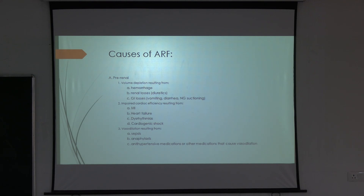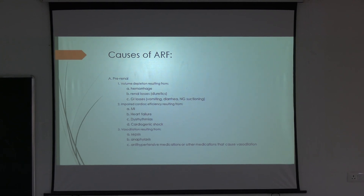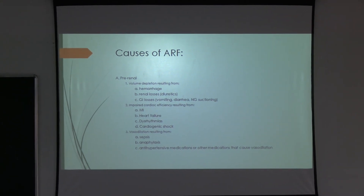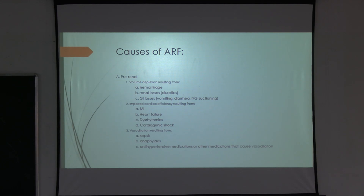Pre-renal causes also include impaired cardiac efficiency due to myocardial infarction, heart failure, dysrhythmias, or cardiogenic shock, leading to decreased blood supply to the kidneys. Additionally, vasodilation — as in sepsis, anaphylaxis, or anti-hypertensive medications — can reduce blood supply and cause acute renal failure.